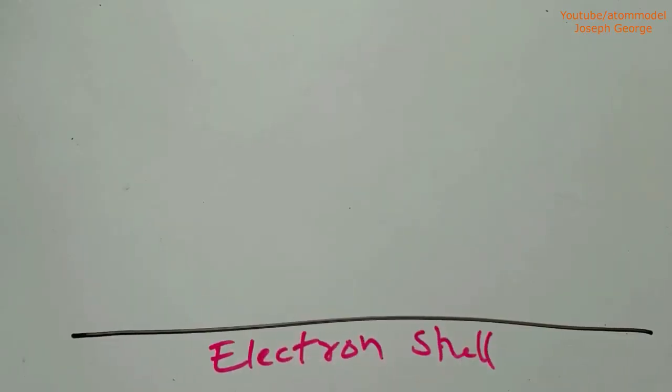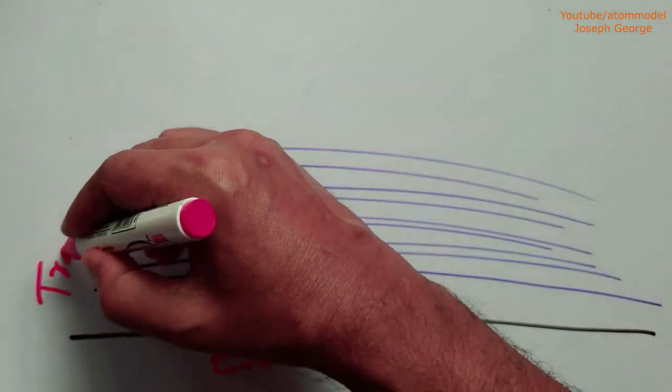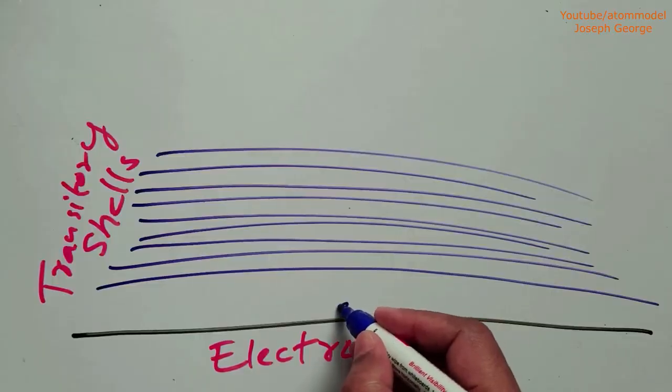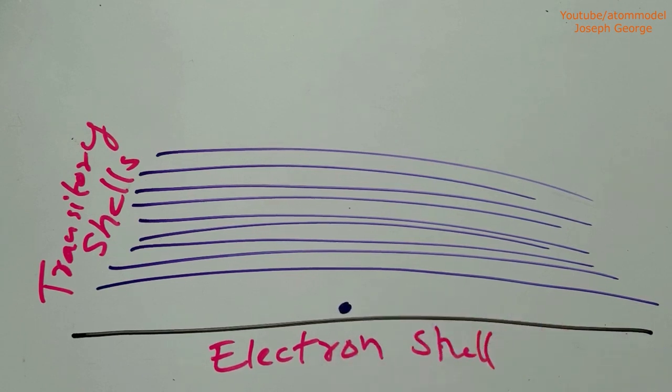An atom has two types of shells: electron shells and transitory shells. Electron shells are the regions in which the electrons in an atom are situated and the atom is in a non-excited state.